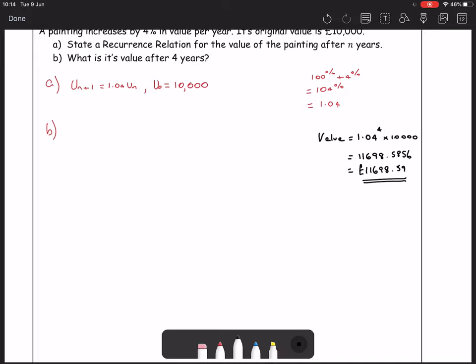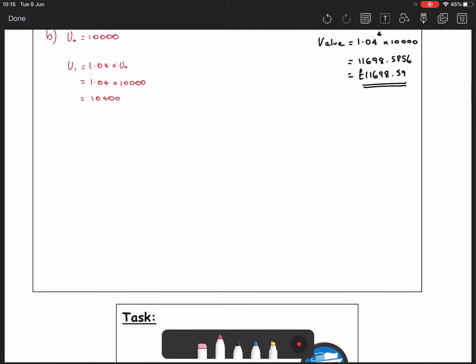So how does this look when we compare it to recurrence relation? Well, we know u₀ is equal to 10,000. And we want to be able to work out our value after one year, two years, three years, and then that gets us to our fourth year. So u₁. Let's look at the next term in the sequence is 1.04 times the previous one. So if I'm writing my recurrence relation for u₁, then it's 1.04 times by whatever my u₀ value is, which is 1.04 in this case times 10,000. I can just put that into my calculator